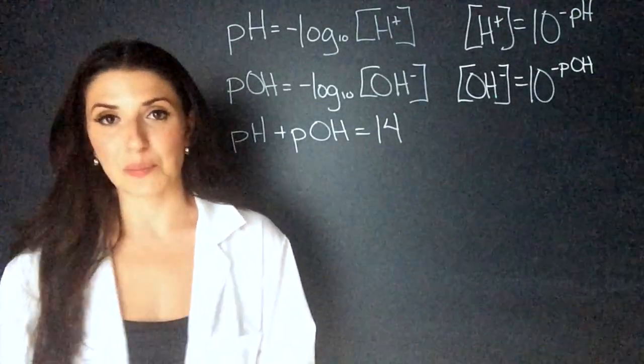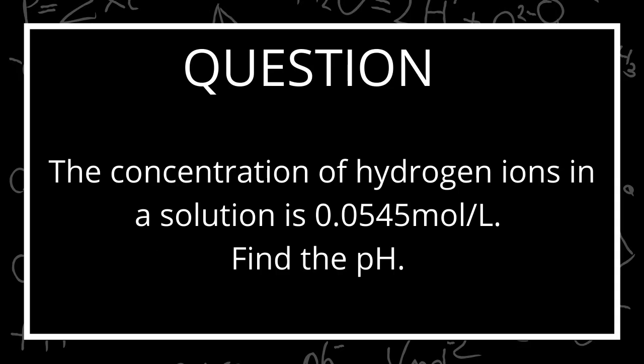So, I'll try some examples. The question says that the concentration of hydrogen ions in a solution is 0.0545 moles per liter. Find the pH. Easy.